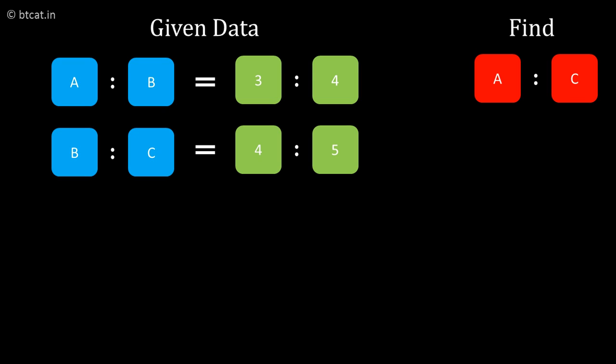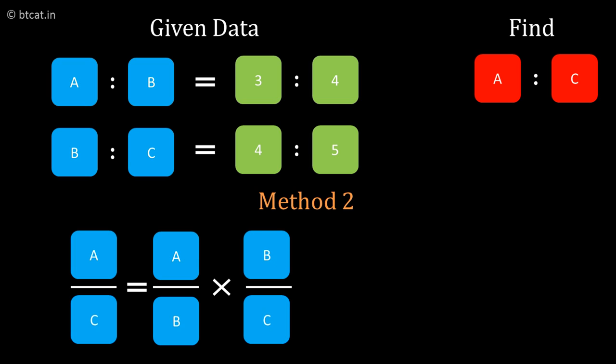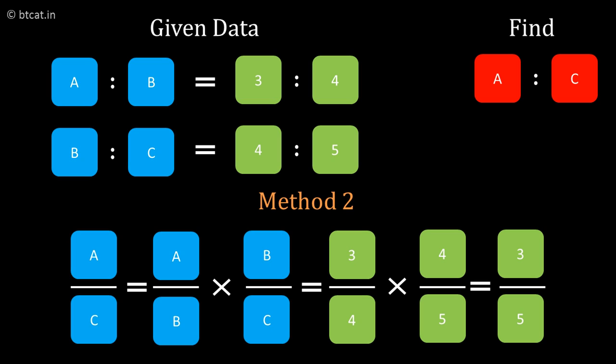There is one more method which we can directly use to get A to C, which is A/C = (A/B) × (B/C). Applying this, we get (3/4) × (4/5), and solving we get 3/5. So in any case we can find the ratio of A to C given the other ratios A/B and B/C.